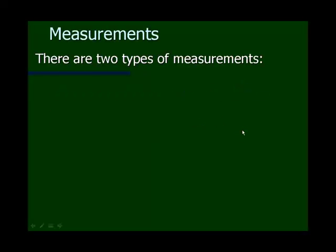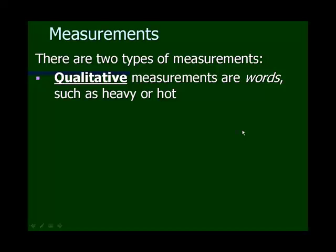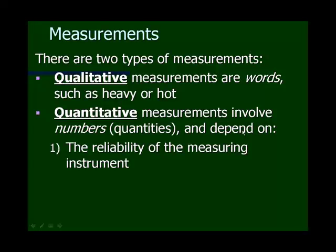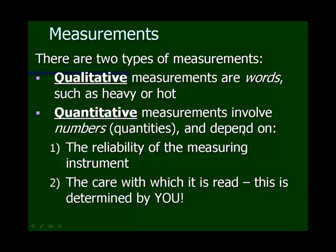You primarily have two types of measurements. Qualitative measurements are words — descriptions. It's heavy, it's hot, it's warm outside today. Quantitative measurements are numbers or quantities, like 95 degrees Fahrenheit. Your quantitative measurements depend on two things: the reliability of the measuring instrument, and how well you read it. That determines how good your quantitative measurement is.